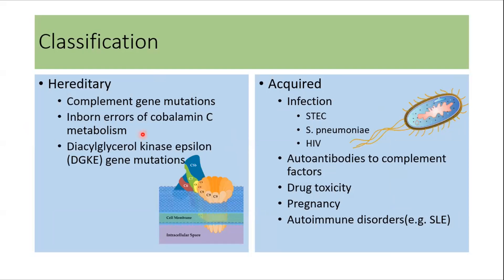HUS can be classified into hereditary and acquired HUS. Hereditary HUS usually occurs because of complement gene mutations, inborn errors of cobalamin C metabolism, and diacylglycerol kinase epsilon gene mutations. Acquired HUS occurs because of infections like STEC infection, Streptococcus pneumoniae infection, HIV infection, autoantibodies to complement factors, drug toxicity, pregnancy, and autoimmune disorders.